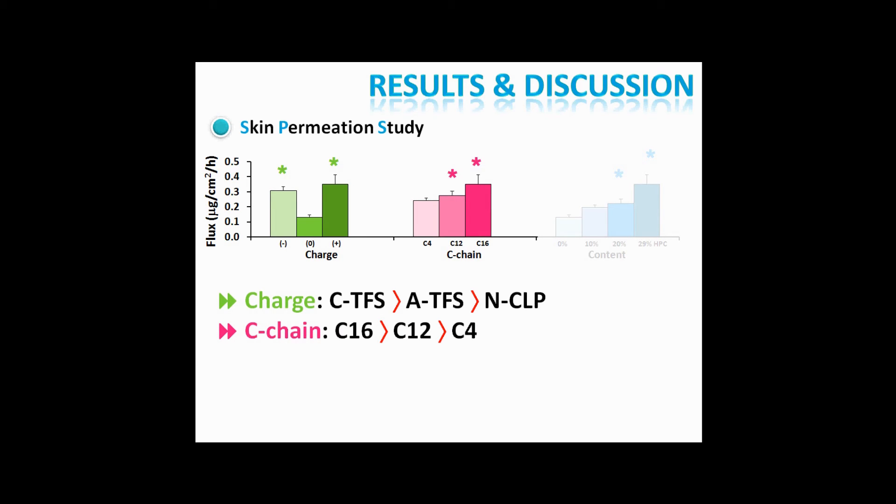The skin permeability of the transfersomes increased when the carbon chain length of the surfactant increased. The skin permeability of the vesicle formulation increased with increasing chain length in the order C4, C12 and C16.